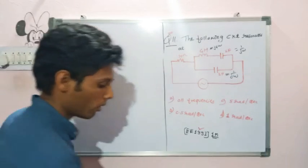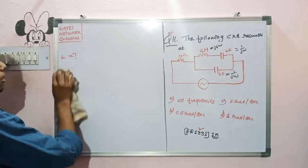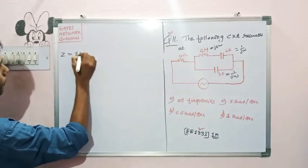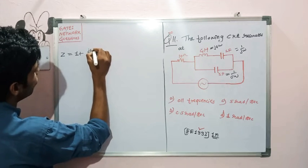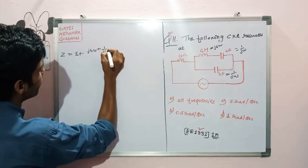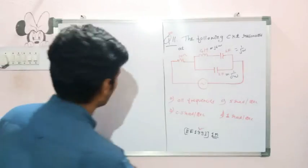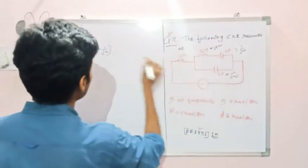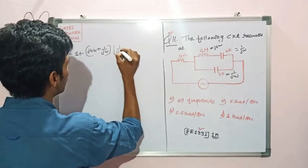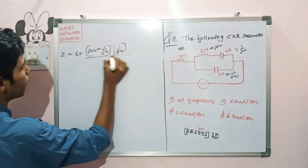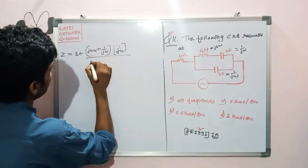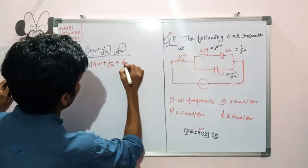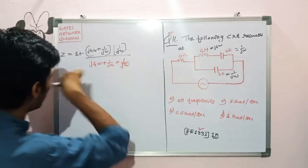Now we calculate the equivalent impedance Z and equate the imaginary part to zero. Z equals 1 plus the parallel combination of j4ω in series with 1/(jω), all in parallel with 1/(jω). The parallel term is evaluated as the product over sum: [j4ω + 1/(jω)] combined with 1/(jω) divided by the sum of all branches.